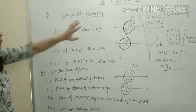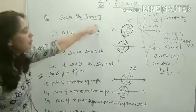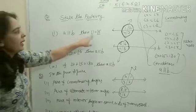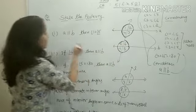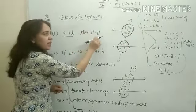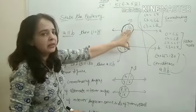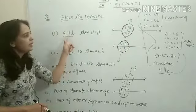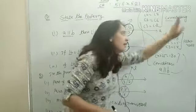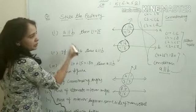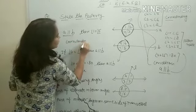Now this is question number one. I hope कि आपको वो concept समझ में आ गया। First question: state the property. Given: A parallel to B, and angle 1 is equal to angle 5. Angle 1 equal to angle 5 — कब? जब A parallel B है। Otherwise equal नहीं होता। अगर lines parallel नहीं होती, कोई भी property satisfied नहीं होगी। यहाँ property है: corresponding angles are equal।